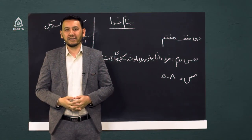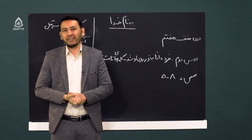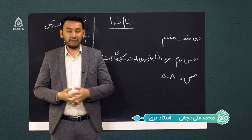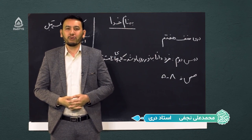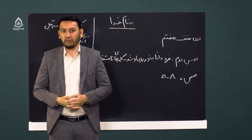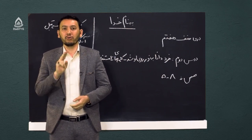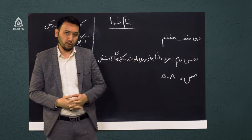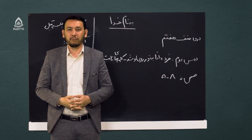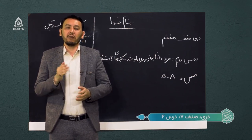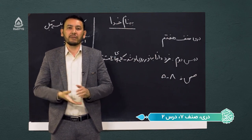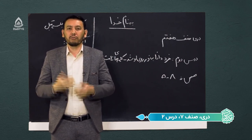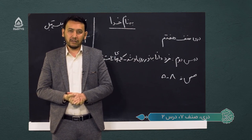بسم الله الرحمن الرحیم. عرض سلام و ادب و احترام خدمت شما شاگردان عزیز صنف هفتم به مکتب حادی، درس ادبیات دری خوش آمدید. در جلسه دوم، درس دوم با دو قسمت خدمت شما عزیزان هستیم. در بخش اول در مورد شعری از عطار نیشابوری شاعر پرآوازه قرن ششم و اوایل قرن هفتم، و در قسمت دوم در مورد دستور زبان و کلمه‌های نامستقل بحث خواهیم کرد.